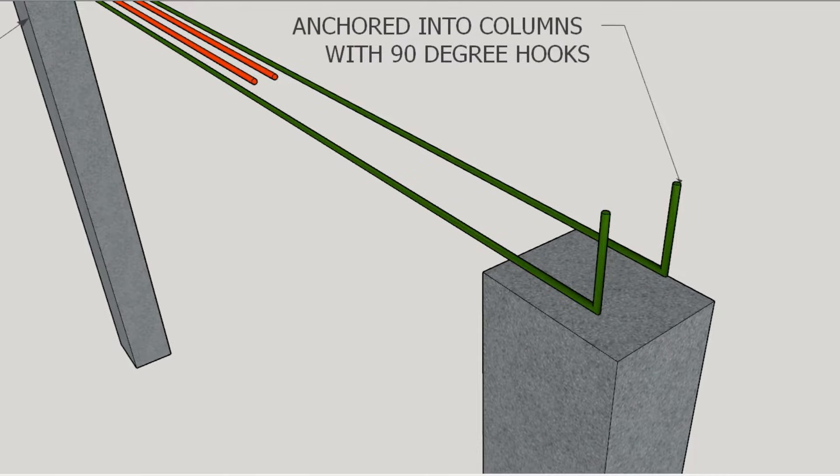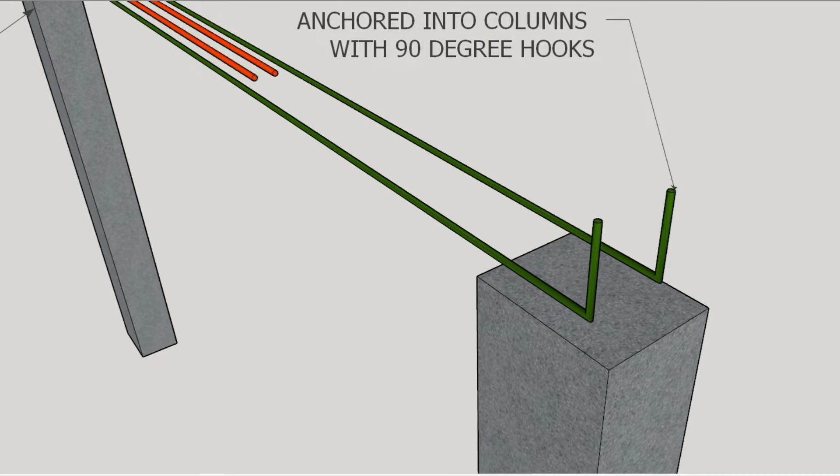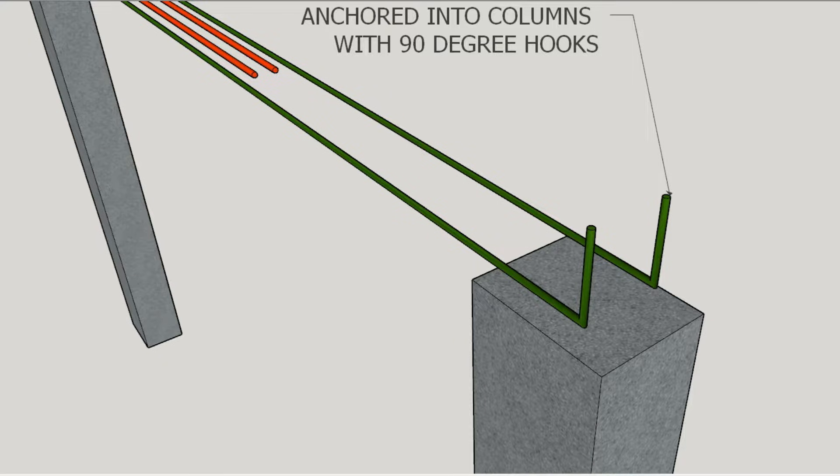These bottom bars extend between columns and feature 90-degree hooks at their ends for secure anchoring.